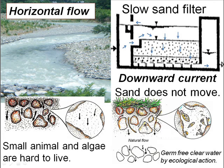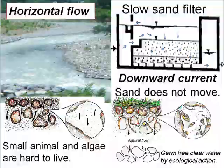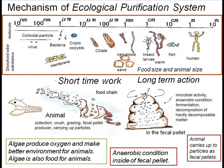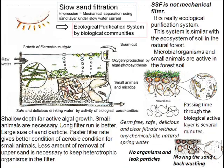Horizontal flow in a river, downward current in a slow sand filter — sand and stone don't move, algae and animals can grow. The filtrate becomes germ-free clear water by ecological action. The basic mechanism is food chain. There are short-time and long-time biological actions. Slow sand filter is not a mechanical filter — it is really an ecological purification system, similar to the ecosystem of soil in the natural forest.